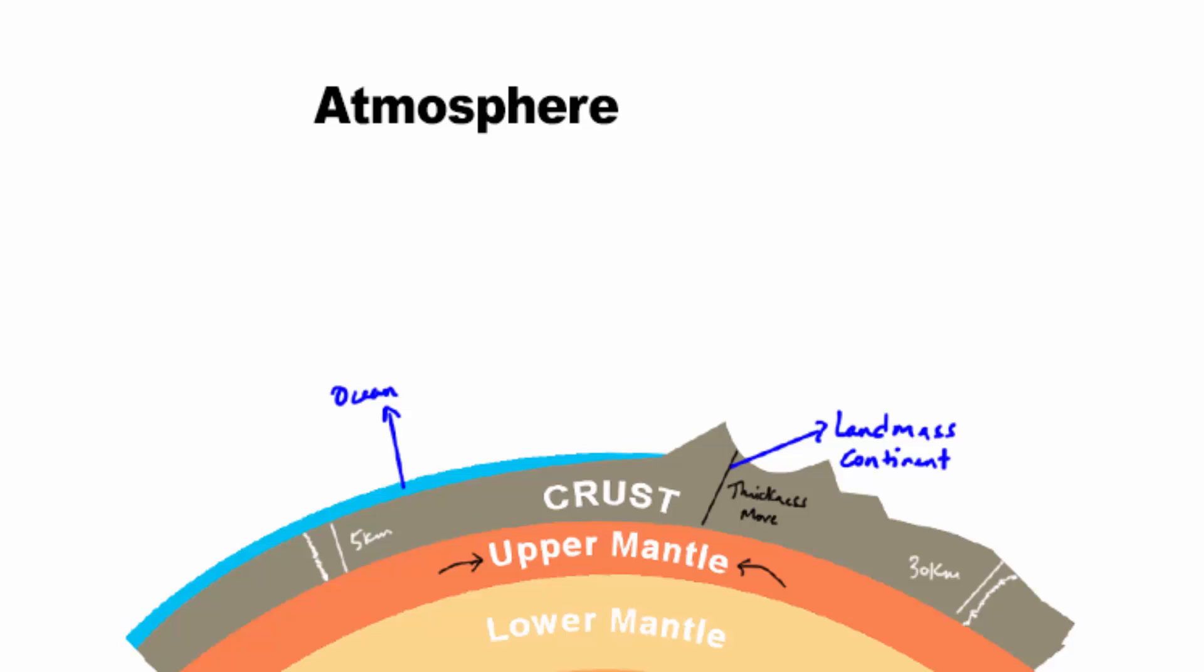So in between the atmosphere and the lithosphere, water circulates through the water cycle. Now you must be thinking, what is the use of water cycle?